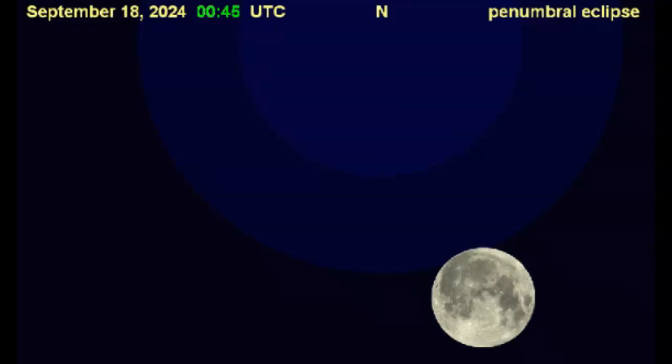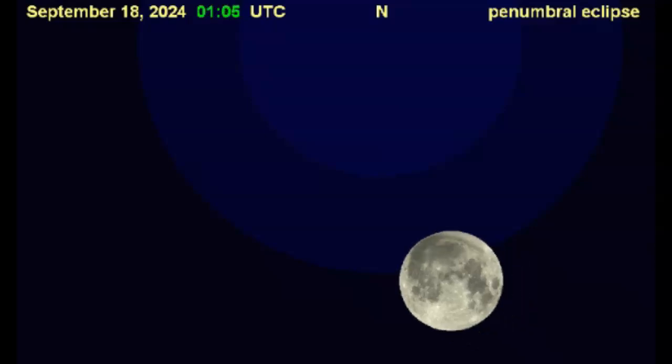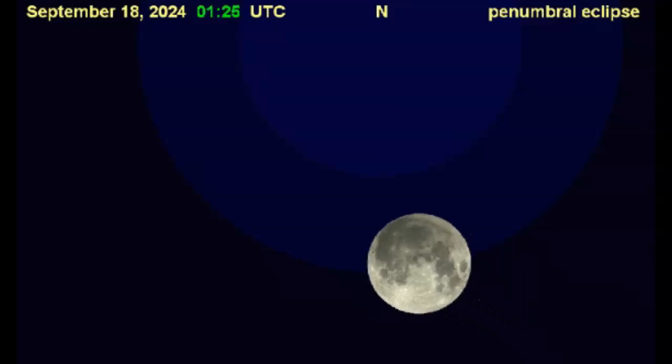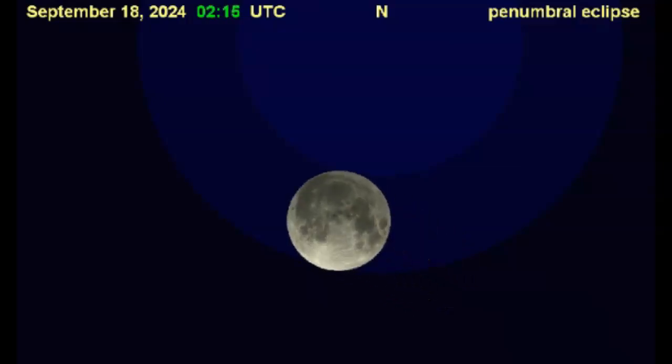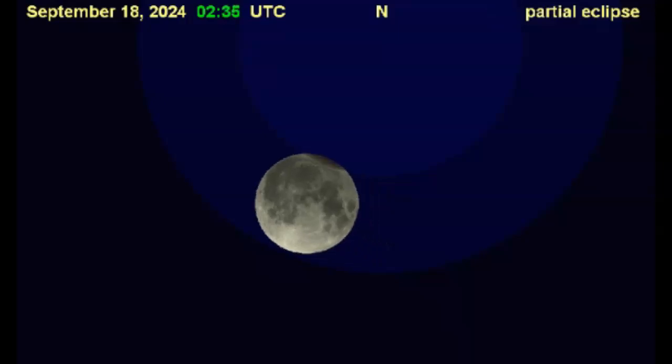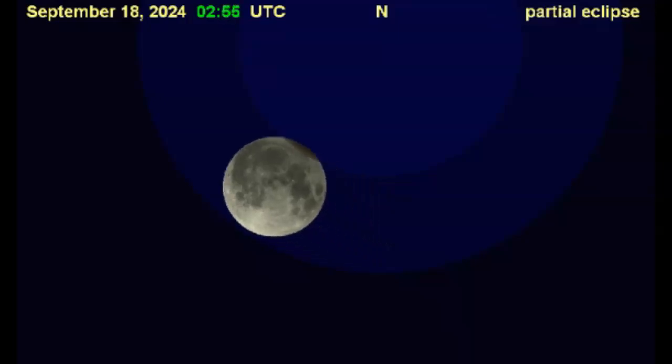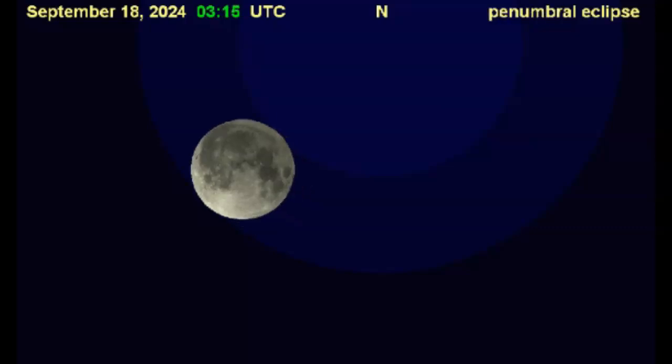Full moons that occur on the perigee side of the moon's orbit are extra big and bright. This week's harvest moon becomes full within 10 hours of perigee, making it about 5% larger and 13% brighter than usual.